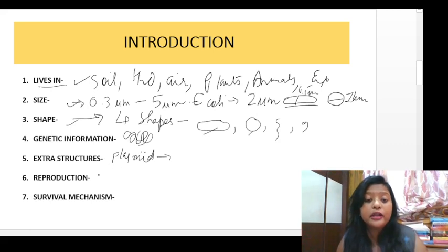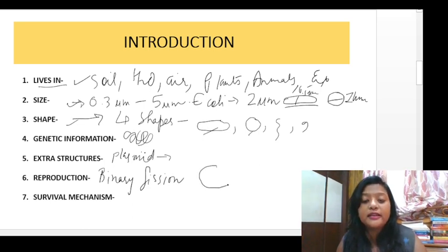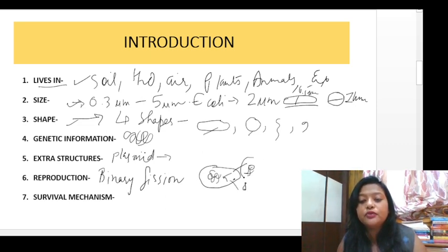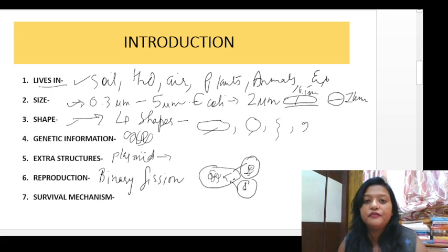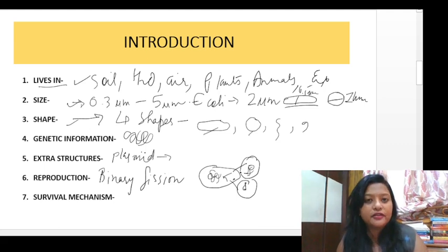How do bacteria reproduce? They reproduce with the help of binary fission. The bacterial cell's DNA replicates into two copies. After that, the bacterial cell divides into two identical cells, each identical to the parent. 'Fission' means break, and 'binary' means two — so binary fission means splitting into two copies.